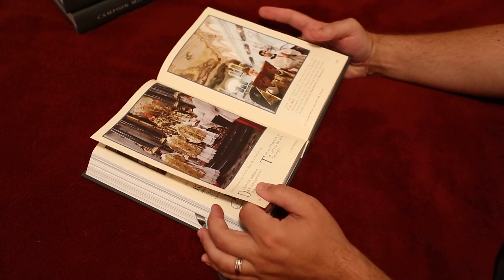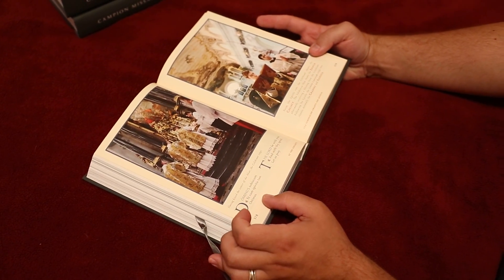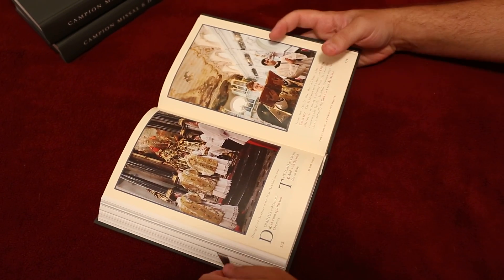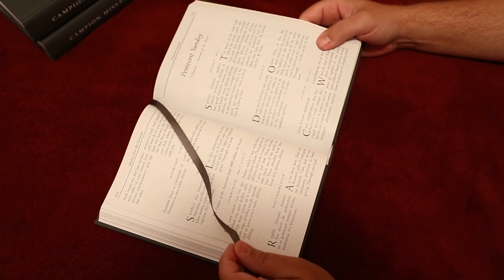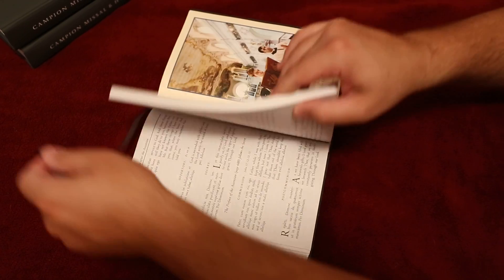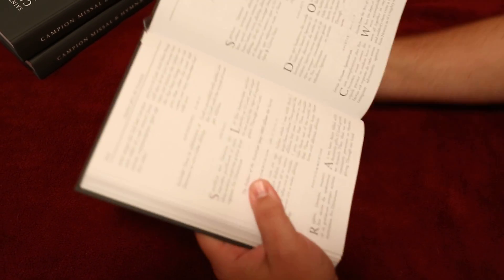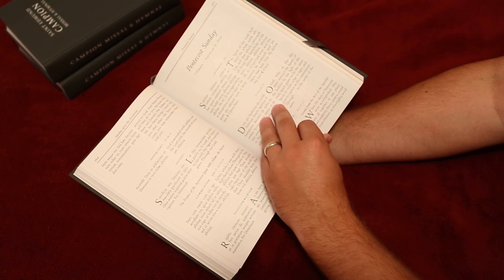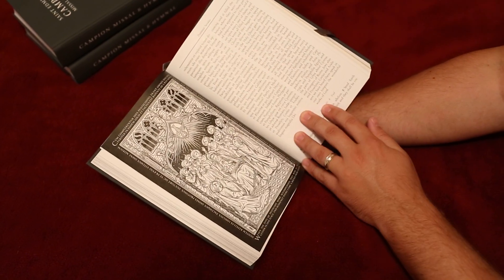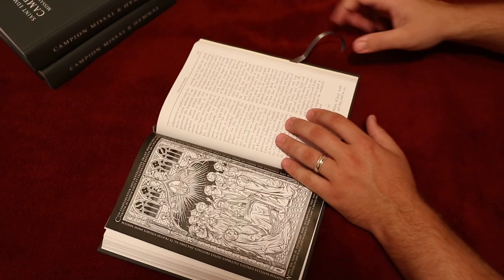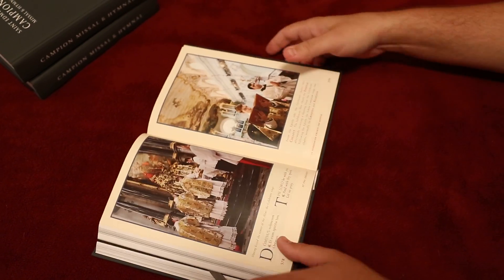But sometimes you come to a part, for example, the epistle, that is a longer part. So what I would do in that instance is I would actually move the ribbon to where I was, I would read the epistle, which is very long, and then when I'm done reading that, I would move the ribbon back.